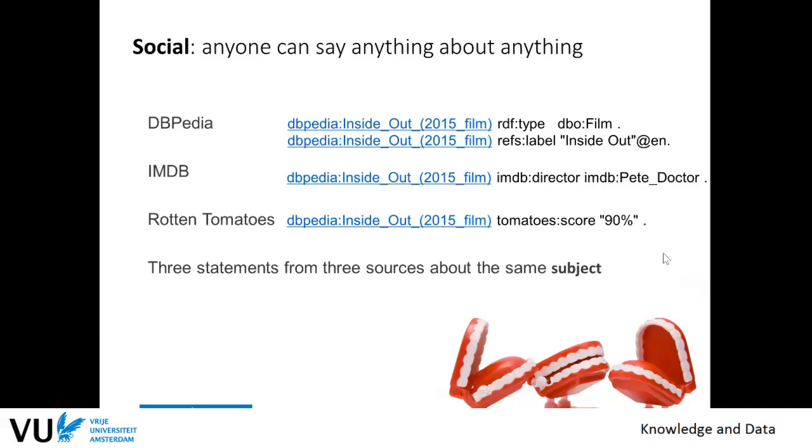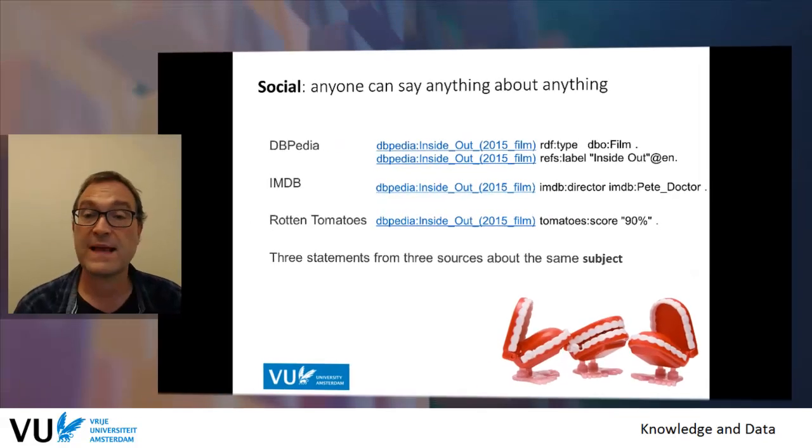So there are three statements for the same source, for the same resource, about the same subject and that makes it very powerful. It uses one URI, one identifier, so that it's clear that it talks about the same objects, but the information comes from different places and is reusable and this is really one of the strong points of the RDF.